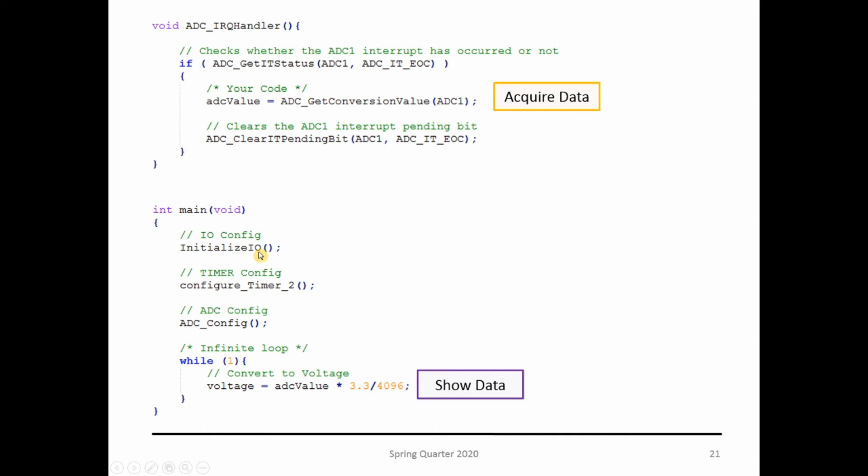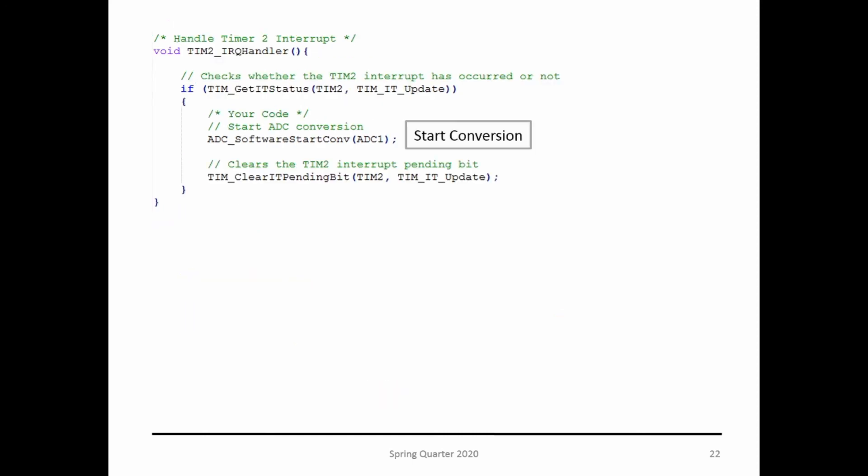Inside my main, I'm initializing the GPIOs, configuring the timer and ADC config, then showing the data. Inside my ADC ISR, nothing changes—I'm acquiring the data and sending to the volatile. Inside the timer ISR, I start the conversion. Whenever the timer expires, it starts the conversion and everything should work fine.